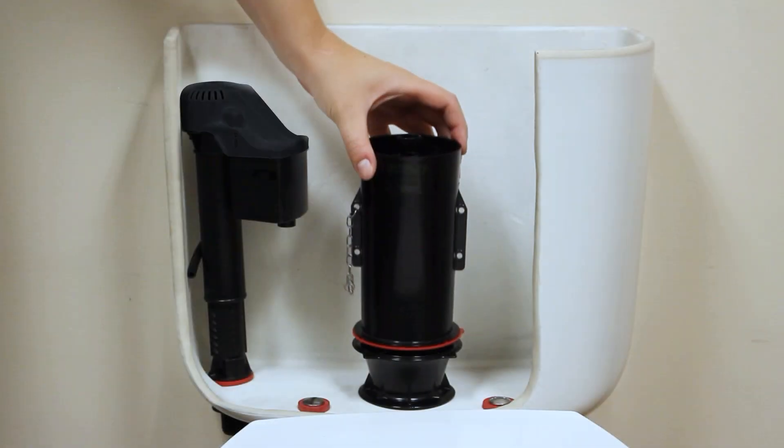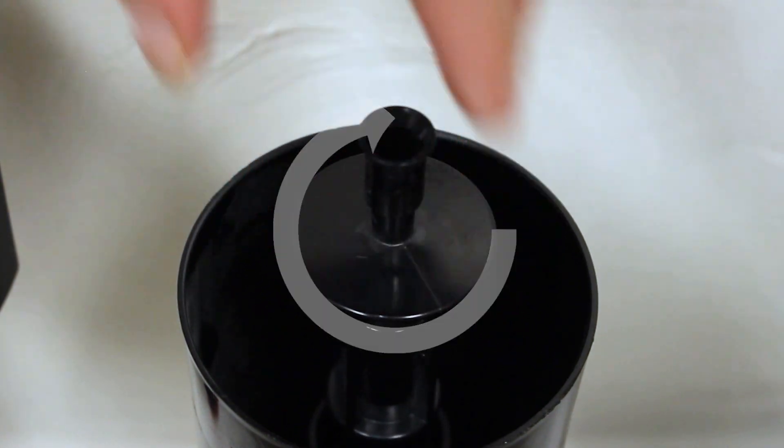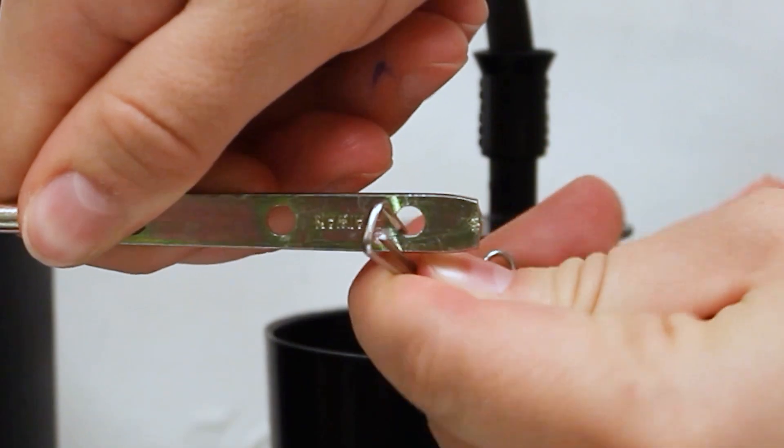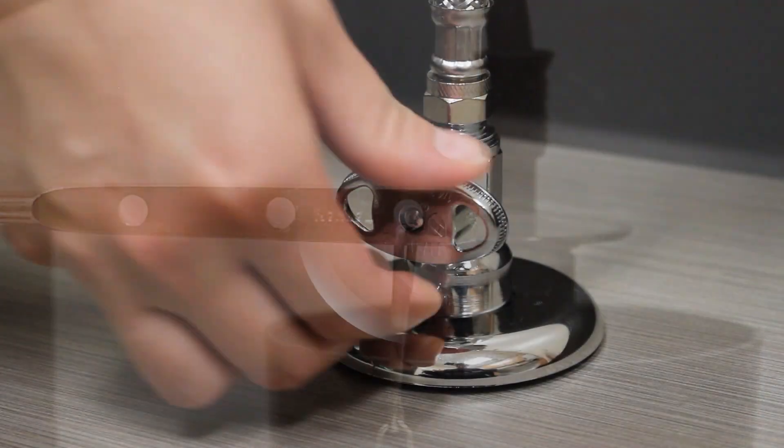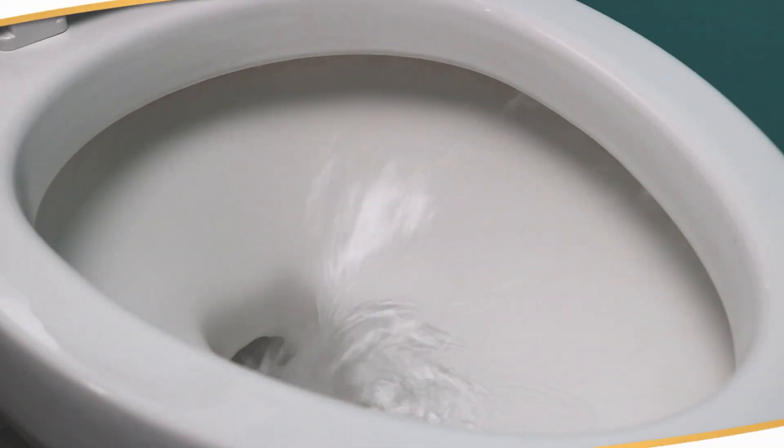Place the flush tower back on top and twist the cap clockwise to lock it into place. Put the refill tube back inside the cap and reattach the flush lever chain to the flush lever arm. Turn the water supply back on and enjoy a smooth running toilet without any leaks.